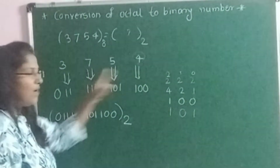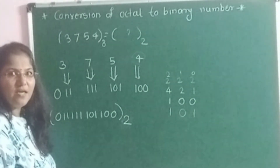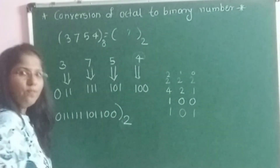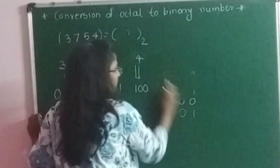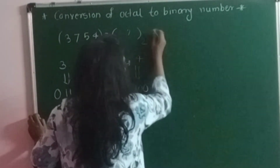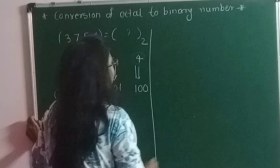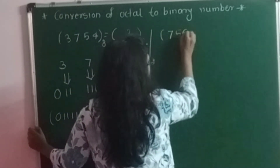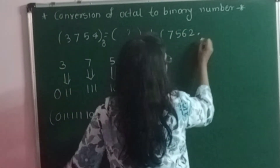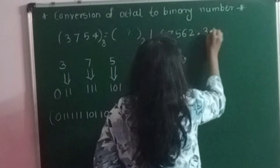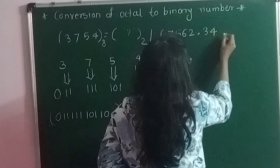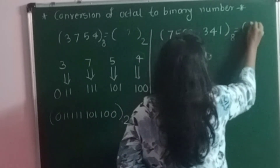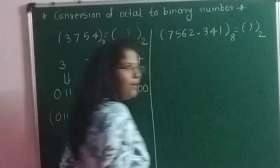Now I will take one more example in which I will consider the fractional part of an octal number. Suppose the given octal number is 75620.341. This is the given octal number and I want to convert it into its equivalent binary.